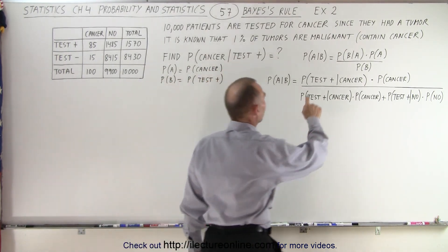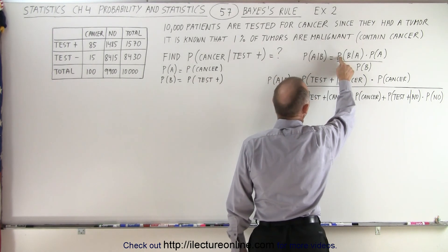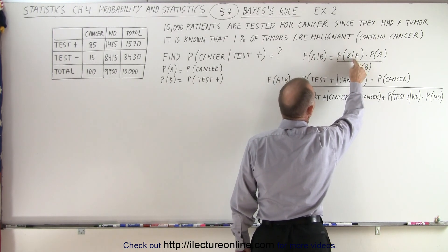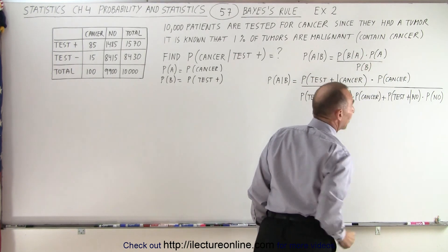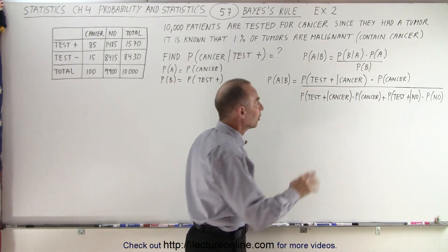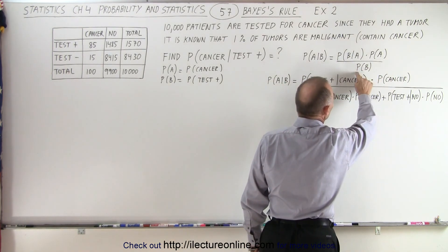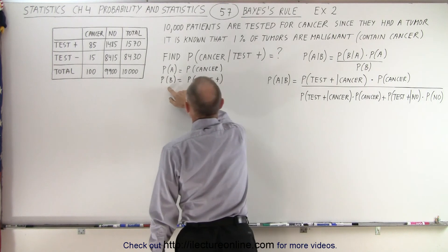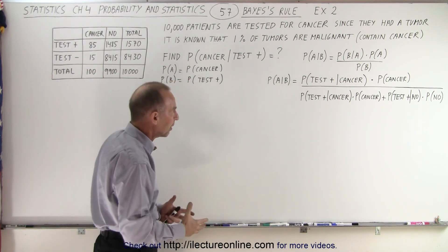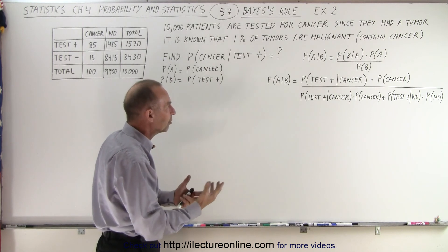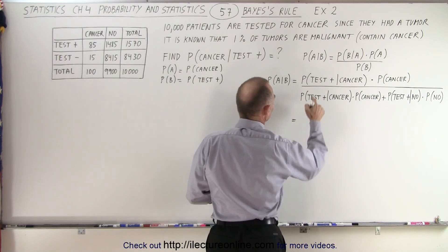Here's the equation. The probability of A given B is equal to the probability of B given A times the probability of A, divided by the probability of B. The denominator is the sum of all the possible ways in which you can get probability B. Probability of B is testing positive, so we want all the probabilities for testing positive. Let's plug in numbers.